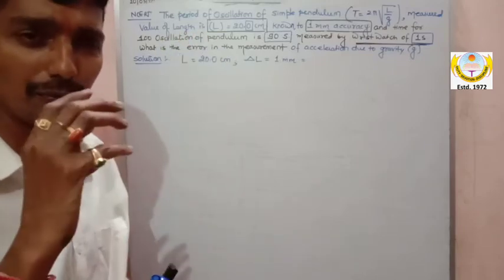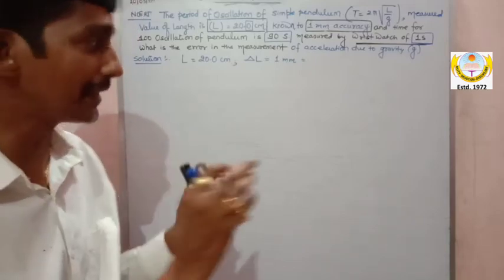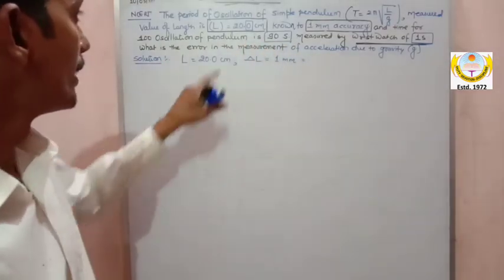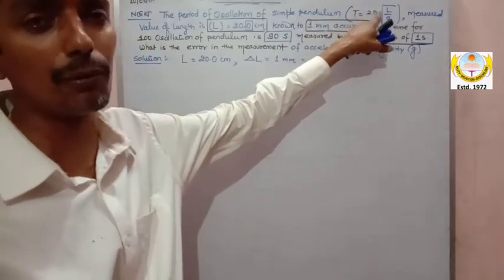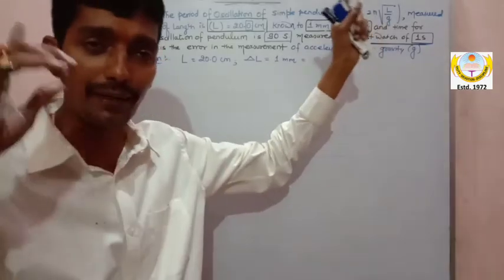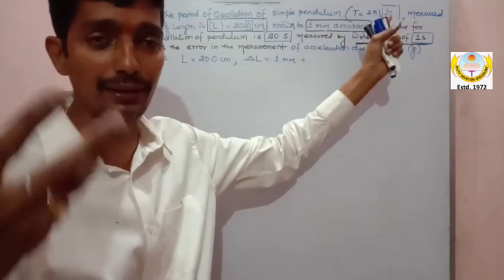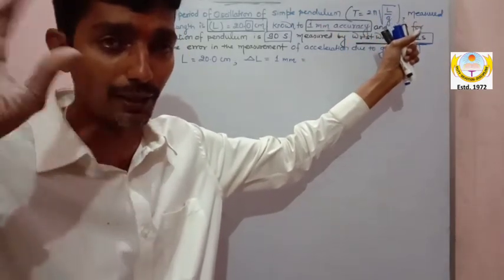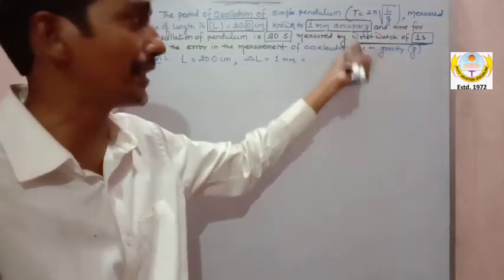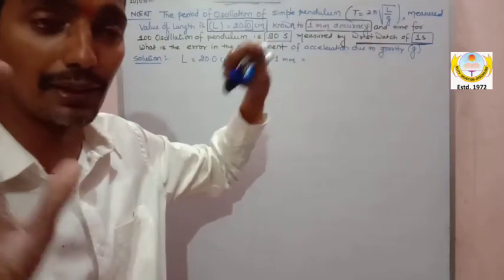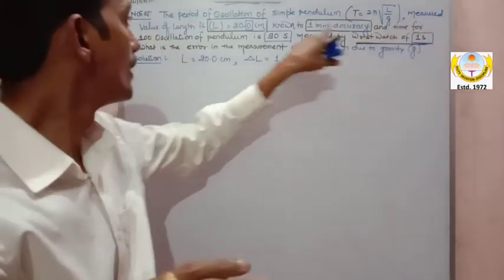I have taken this question from NCERT. It is a little complex in terms of word relations and word manipulations. The period of oscillation of a simple pendulum — everybody knows the period is denoted by capital T. The formula is given as T = 2π√(L/g), which we have done earlier in dimensional analysis.